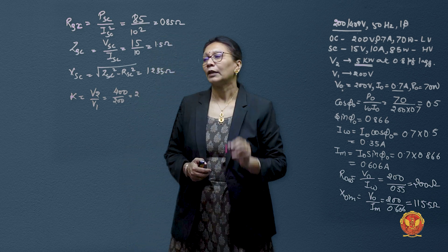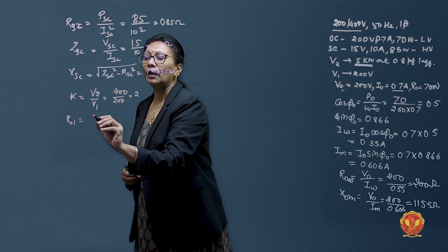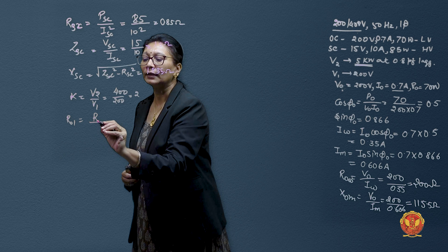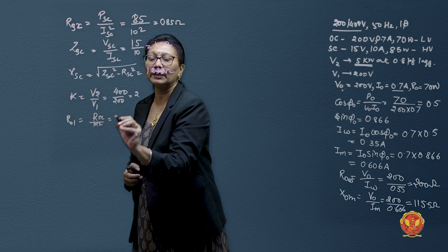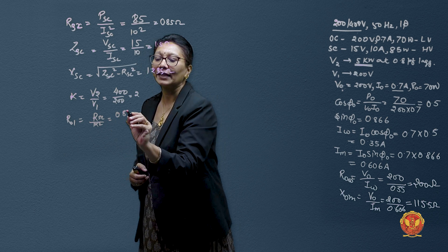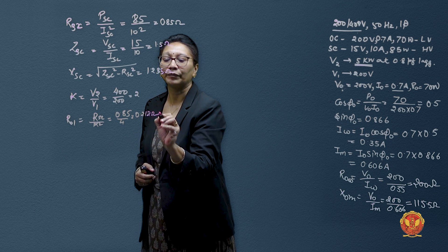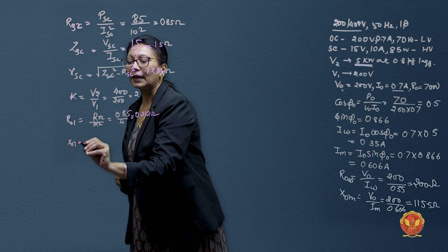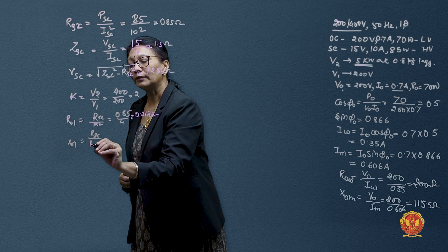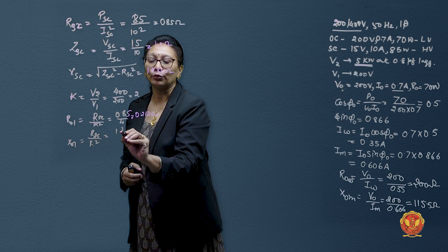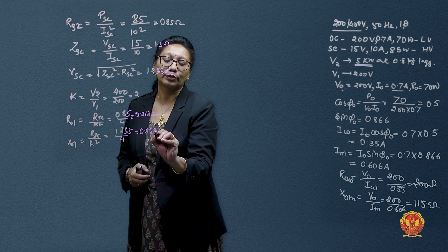We know transformation ratio K is given by V2 by V1. Here we are having V2 400 and V1 as 200, so it comes out to be 2. When referred to primary, R01 would be resistance divided by K square. So it will give us 0.85 divided by 4 and 0.212 ohm is the answer. Similarly, X would be 1.235 divided by 4 and answer comes out to be 0.308 ohms.